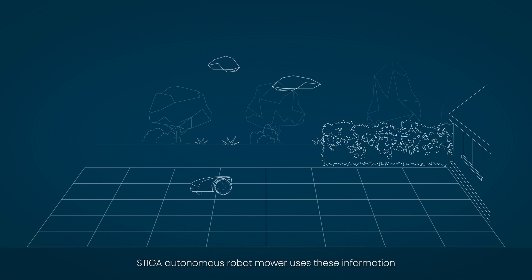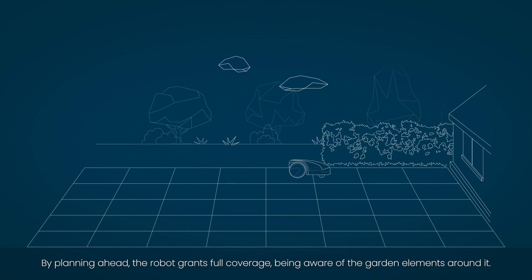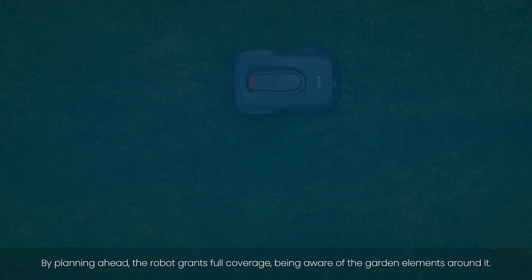Steger Autonomous Robot Mower uses this information to plan mowing areas when signal is strong enough. By planning ahead, the robot grants full coverage, being aware of the garden elements around it.